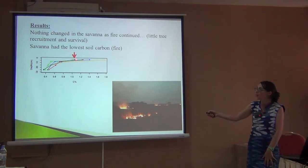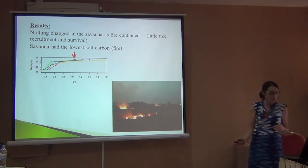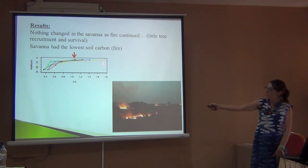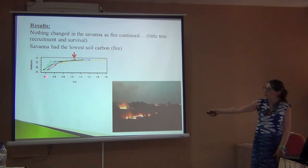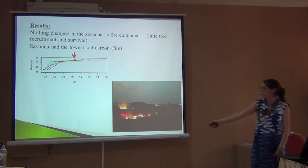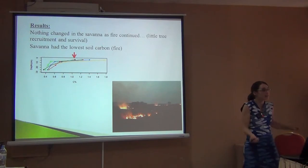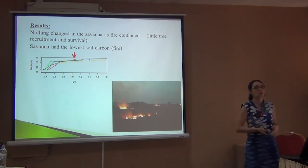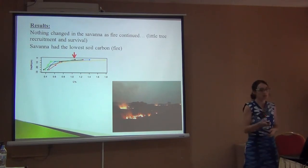Savanna also has the lowest soil carbon. This is what I think is a more useful way to put it: from zero to 30 centimeters deep in the soil, old-growth forest has a lot of carbon — 1.8% — and then savanna has about 1%. As you go deeper, you have less carbon. Savanna has less because of fire: the little organic matter that is out there, fire sends it straight to the atmosphere, so it cannot accumulate in the soil.